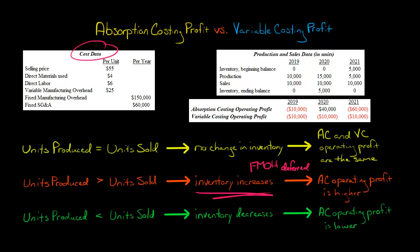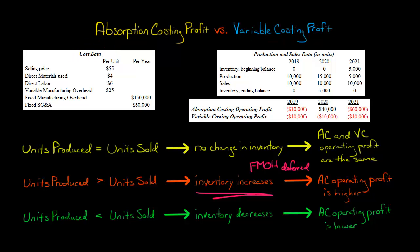I pulled in the data from the examples I did — if you want to check out the videos on how to calculate variable costing and absorption costing operating profit. I'll just summarize here. For 2019, 2020, and 2021, I've got the operating profit based on whether the company uses absorption costing or variable costing. In 2019, the company produces 10,000 units and sells 10,000 units, so the operating profit is identical — it's actually a $10,000 operating loss under each method.